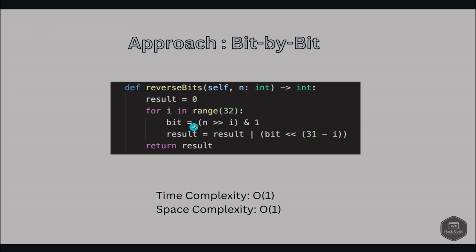We then append to the result using a bitwise OR, shifting the extracted bit left by (31 - i) times. This formula accumulates each bit into our result variable in the correct reversed position. The time complexity is O(1) — constant — since the loop runs a fixed 32 times regardless of input size. Space complexity is also O(1) as no additional space proportional to the input is required.